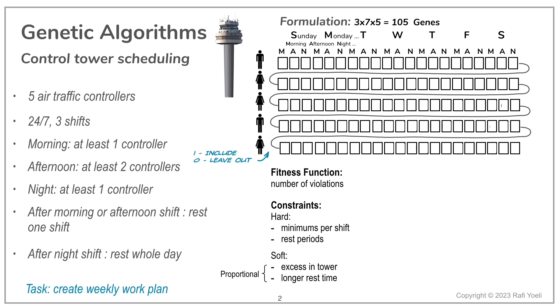Of the remaining 2, excessive controllers in the tower, and more rest time than the minimums, are not really severe violations, but it's still a good idea to regard them as soft constraints, and penalize the fitness function proportionally when they occur.